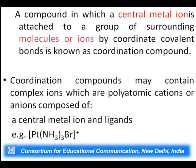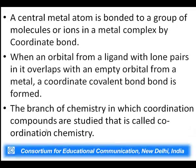The coordination compound may contain a complex ion having polyatomic cations or anions. This complex ion essentially has a central metal ion and ligands. Ligands are the ones which donate a pair of electrons to the central metal atom or ion. The central metal atom or ion must make its empty d orbitals available to accept the lone pair of electrons from the ligands. The orbital of a ligand having a lone pair of electrons overlaps with the empty orbital of the metal and a coordinate covalent bond is formed.